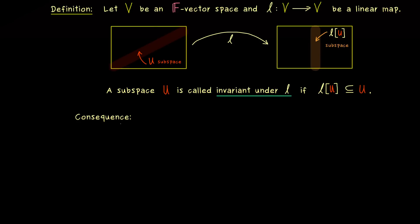You might recognize this is similar to eigenvectors, but now the claim is for a whole subspace U. And for such a special subspace U, we can immediately write down an important consequence. Namely, we can restrict our linear map L to the subspace U and we get a new linear map.